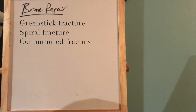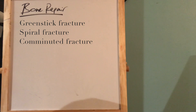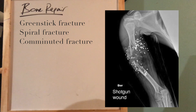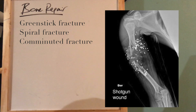A comminuted fracture is when a bone breaks into two or more pieces during a break. This is commonly seen in the elderly when they have brittle bones, or just during very severe fractures in which the bone breaks into multiple pieces.